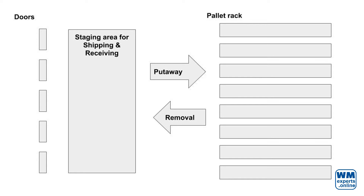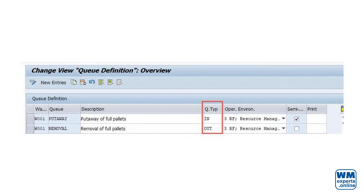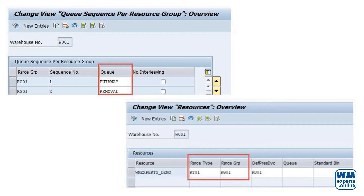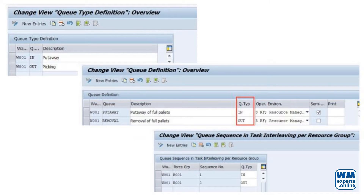The staging area is shared for inbound and outbound staging. We are using two queues only — one for put-away and one for removal. Both queues have a queue type assigned. We are using resource types which are activated for the task interleaving process. The queues are assigned to resource groups, and the resource groups and resource types are assigned to the resources. The two queues are also assigned to different queue types, and we have to find a sequence for these types based on the resource group.